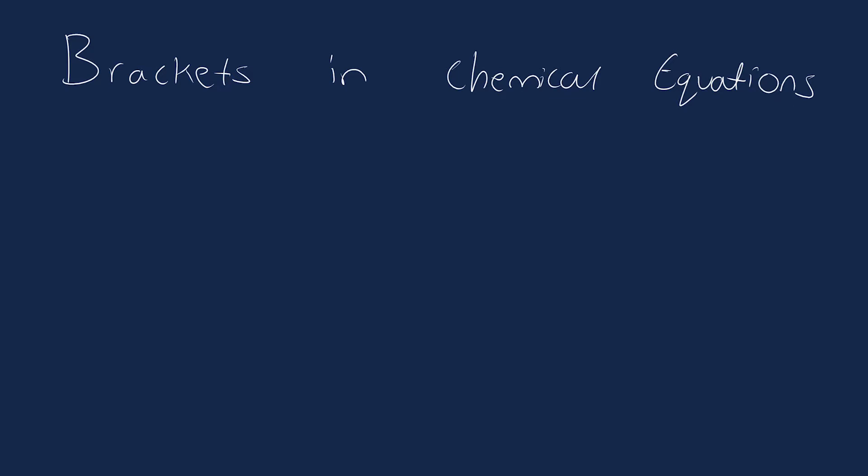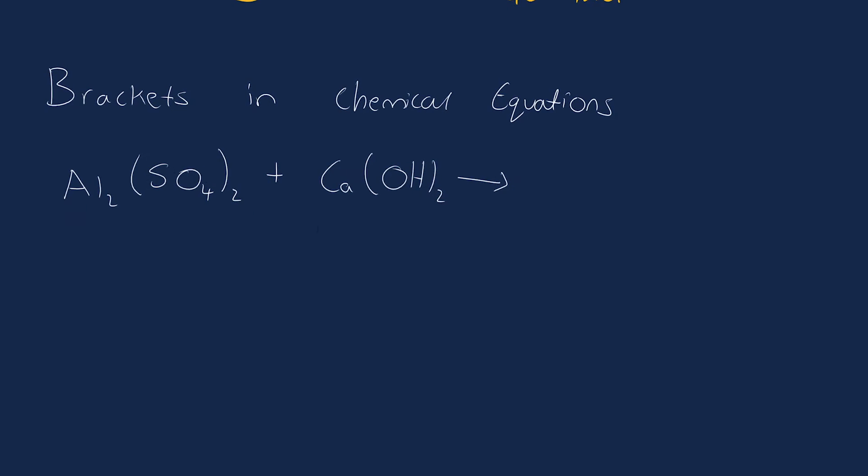We have aluminum sulfate and calcium hydroxide, and these react to produce calcium sulfate and aluminum hydroxide. So that is the equation we're looking at.